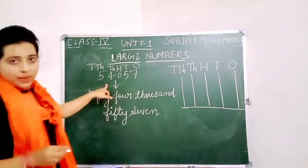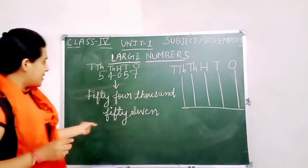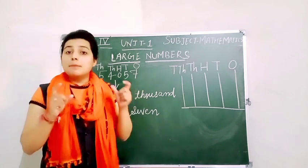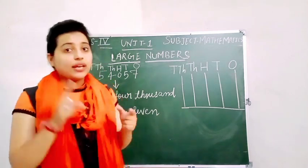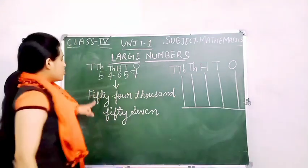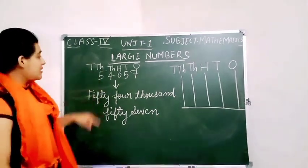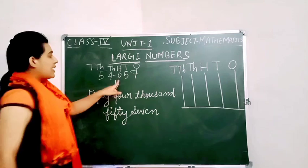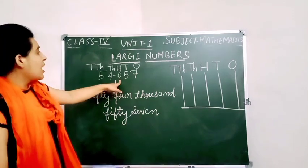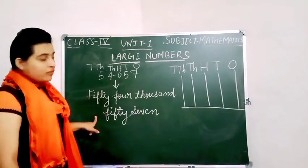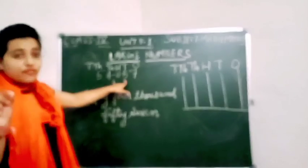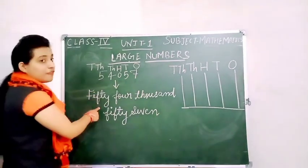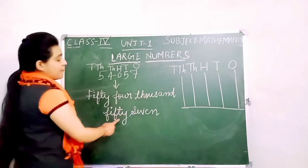So the number name of this number — what is a number name? Number name is the method of representing a number in words. So the number name of this number: how many thousands? 54. 54,000. In the 100's place there is no number, so we will not write it. We will write 50 and how many ones? 7. So the number name is fifty-four thousand and fifty-seven.